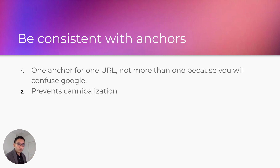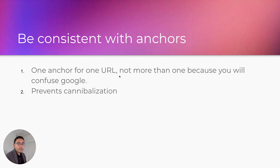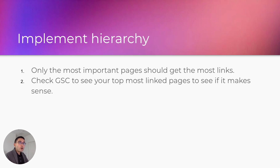Not more than one anchor per URL, because you will confuse Google. If you have a page about essential oils, make sure all internal links pointing to that page use an essential oils anchor — you don't want an essential oils anchor pointing to a meditation page. This also helps prevent cannibalization, so you're not telling Google two different pages are about the same keyword.